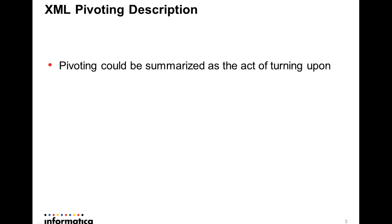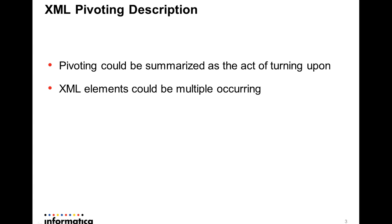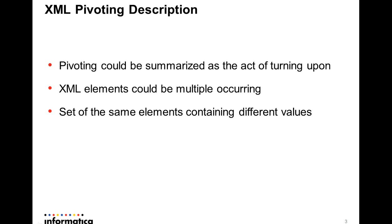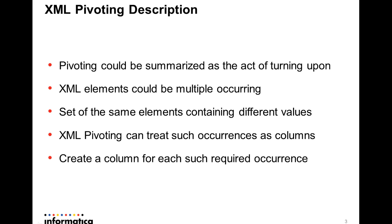Pivoting literally refers to the act of rotation upon a point or a line, so we are essentially rotating the data set to read the XML file accordingly. XML involves arbitrary data structures with multiple occurring elements placed at various hierarchy levels. XML pivoting can be implemented over elements that change their values across occurrences, and we choose the relevant multiple-occurring element based on the requirement.